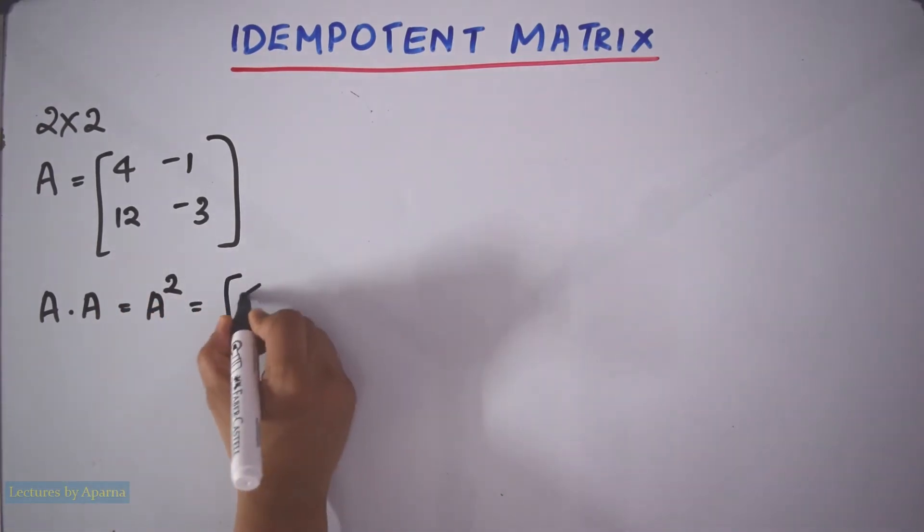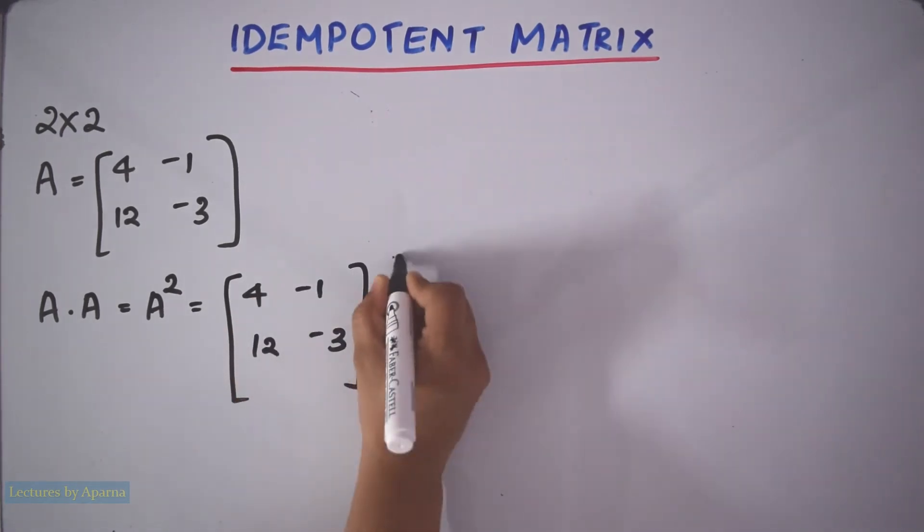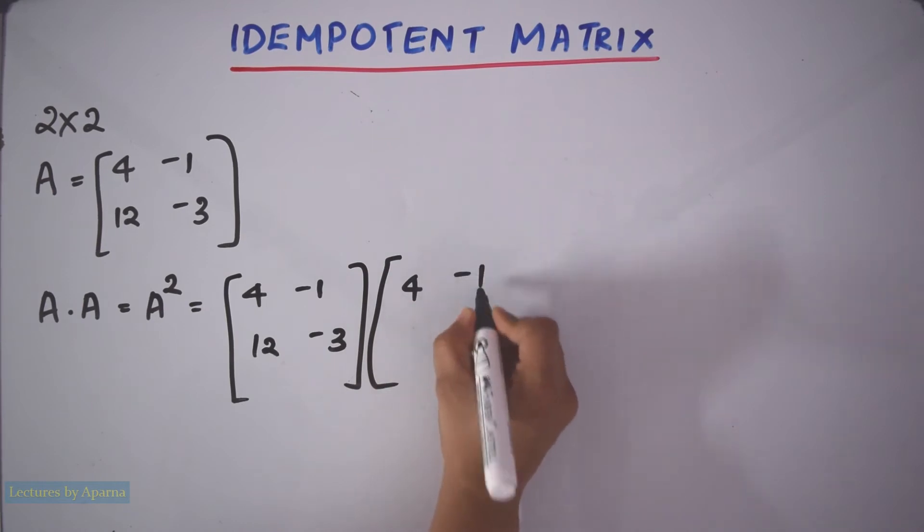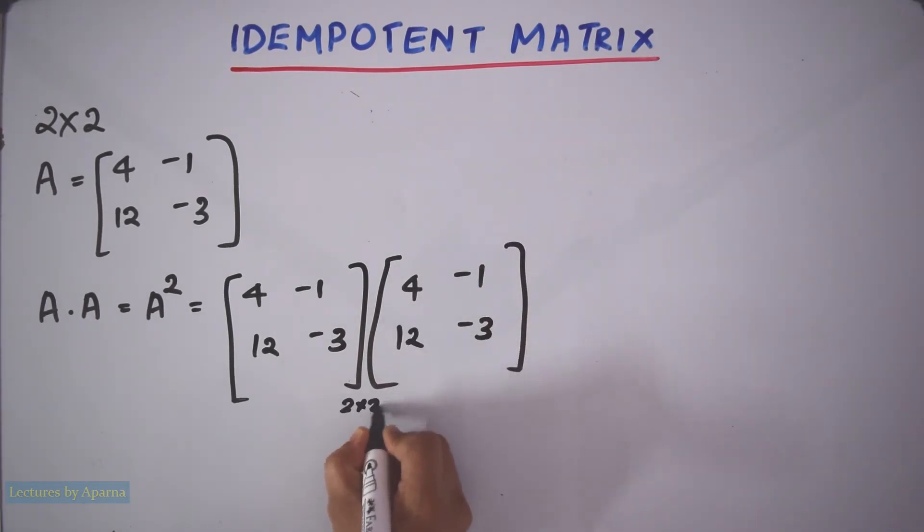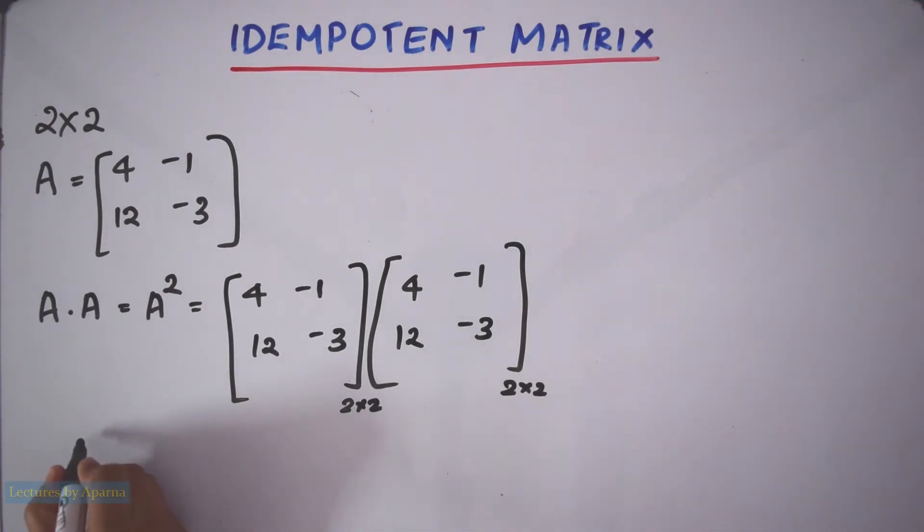That is 4 minus 1, 12 minus 3 multiplied with itself. 4 minus 1, 12 minus 3. This is a 2 by 2 matrix. This is also a 2 by 2 matrix. So the result you get will also be a 2 by 2 matrix.